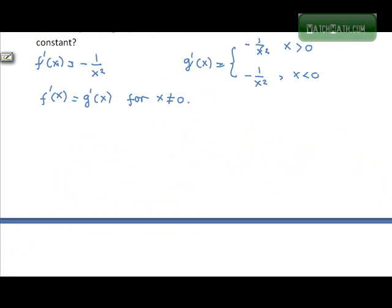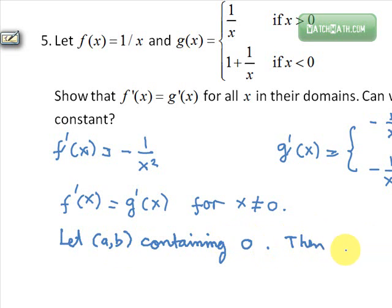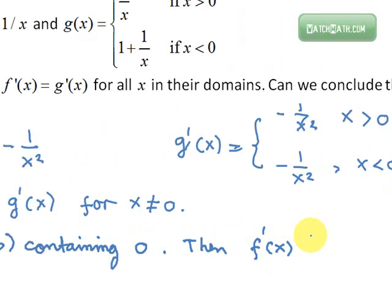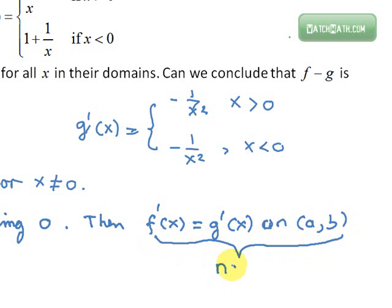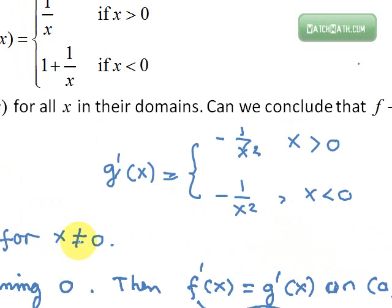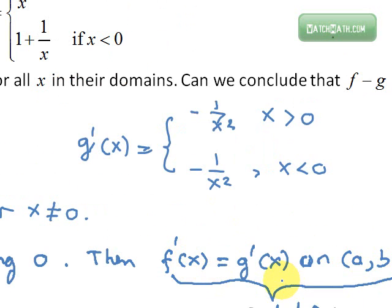Let the interval (a, b) be an interval containing zero. Then the corollary is not true on (a, b). Why is it not true? Because we only have f prime equal to g prime whenever x is not equal to zero. So if we have an interval that contains zero, then that statement is not true, which means we cannot apply the corollary.